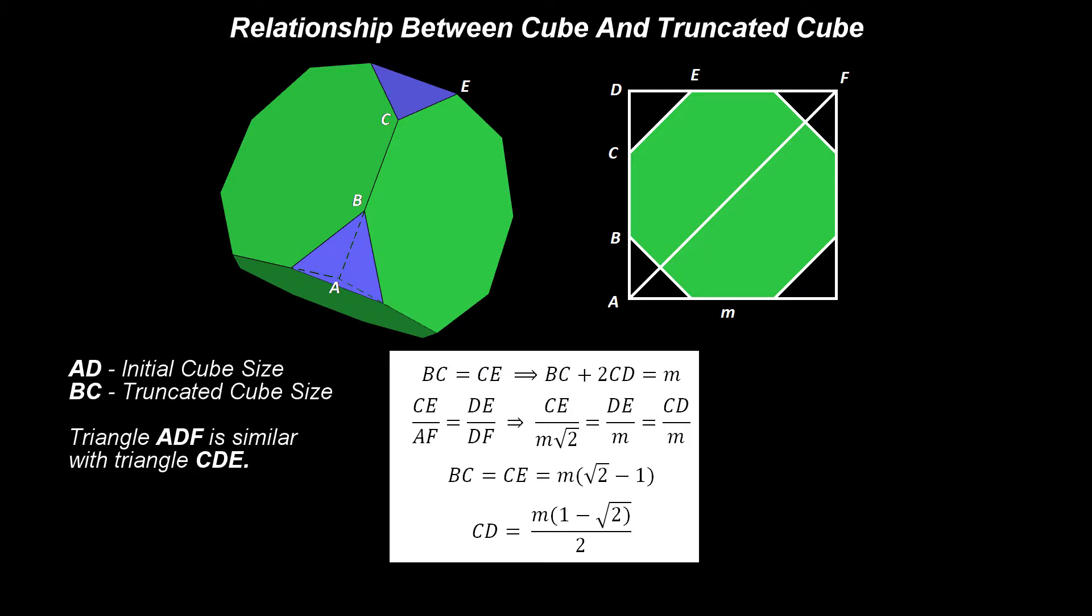In the case of the cube, the division will not have to generate three equal parts. Applying simple geometry, one can determine the relationship between the size of the initial cube AD and the size of the truncated cube, BC.